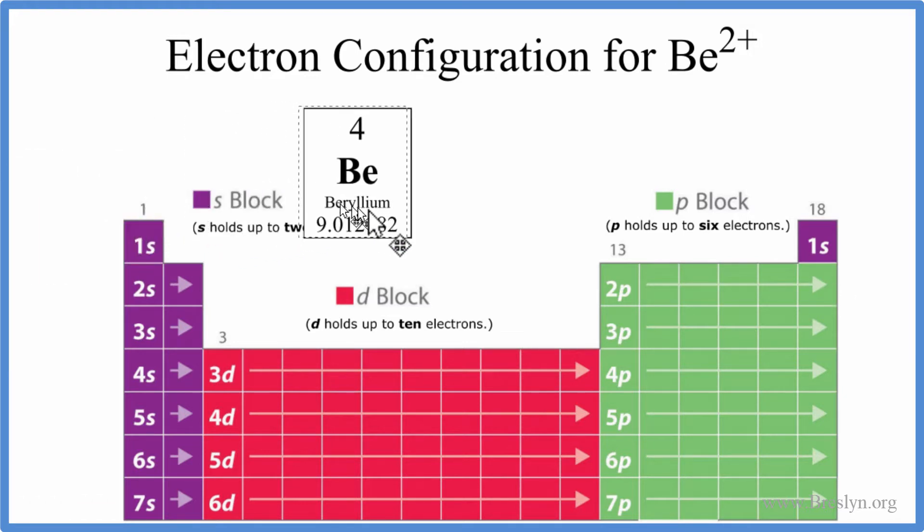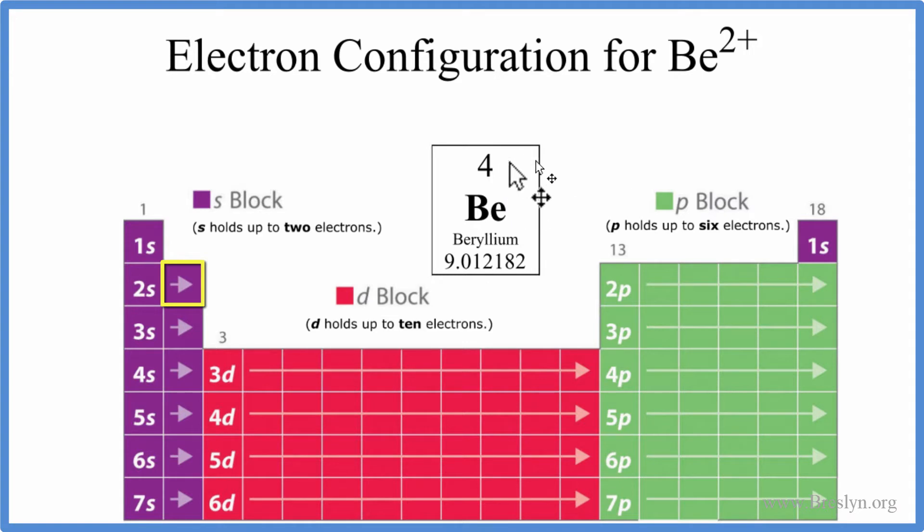So on the periodic table this is Be here and it doesn't have a plus or a minus after it, so it's a neutral atom like all the atoms on the periodic table. So we use the periodic table here that's broken up into these orbital blocks based on the s, p, d, and then the f's down here we don't see that.